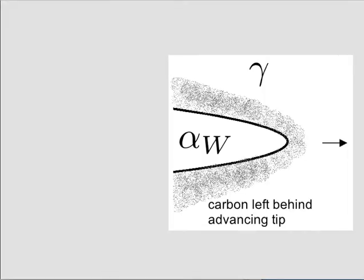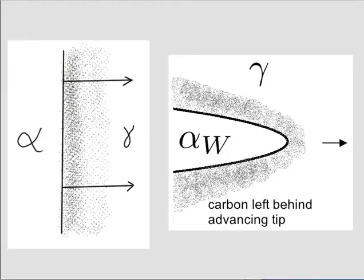In the case of Widmanstätten ferrite you have carbon being left behind the tip, so you are not actually accumulating carbon at the tip of the plate - it is advancing into fresh austenite. We made the approximation that the diffusion distance is roughly the tip radius. If you try to do a mass balance you would be looking at the thickening of the plate, not the lengthening, because the carbon is being left behind.